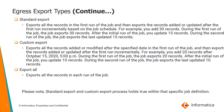Standard Export exports all the records in the first run of the job, then exports records added or updated after the first run incrementally based on the job schedule. For example, if a user adds 30 records during the first run, Standard Export will export all 30 records. After the initial run, if the user updates 15 records, that is treated as an incremental update, and the second run will export only those last updated 15 records.